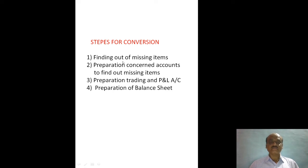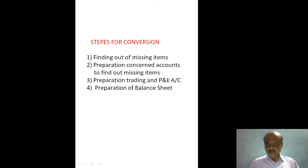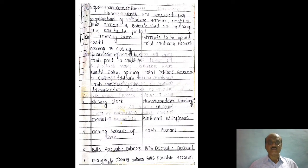Here are the missing items: credit sales, credit purchase, opening capital, then debtors — closing balance of debtors, closing balance of creditors, sometimes cash received from debtors, and cash paid to creditors. These are the accounts to be opened.